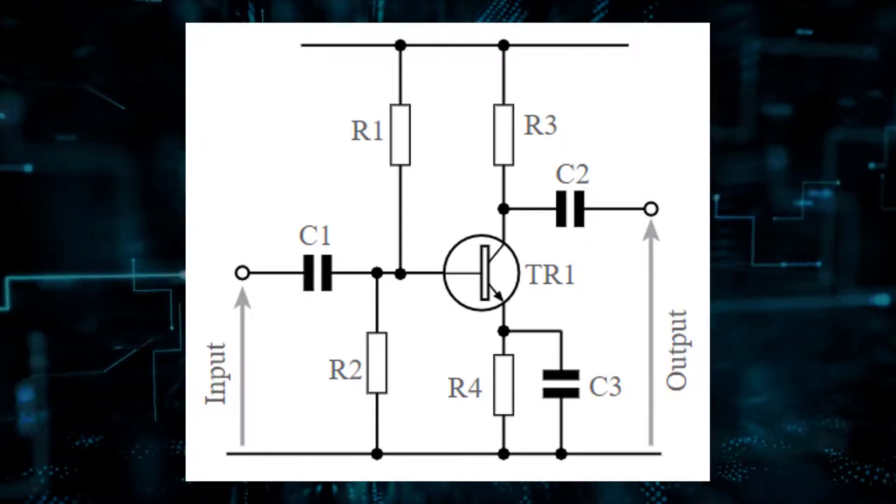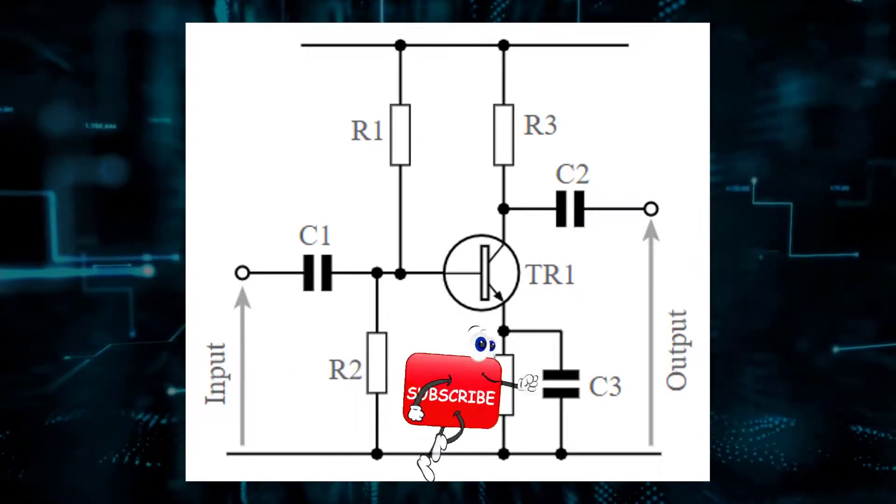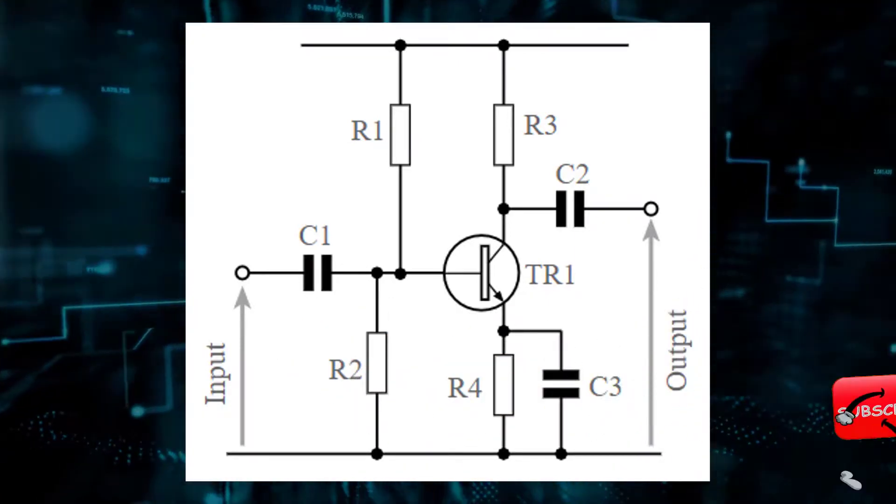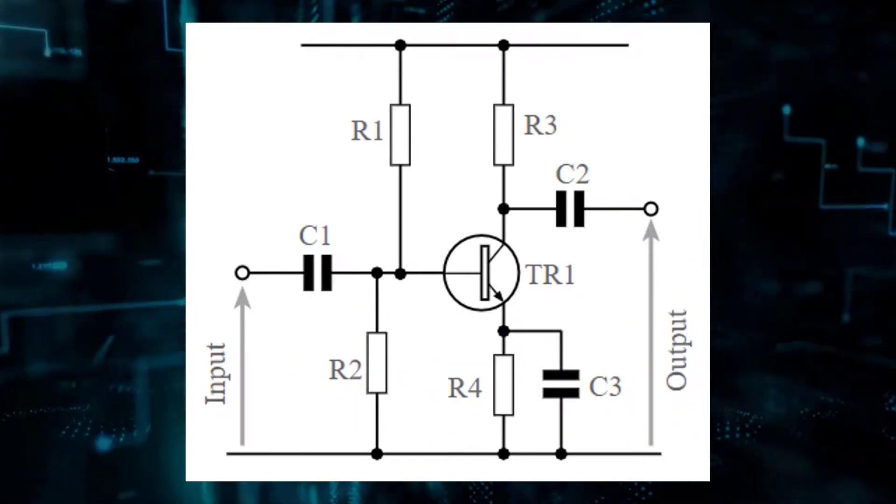As a result, the overall circuit for a Common Emitter Amplifier utilizes several components to ensure that it is able to operate in the fashion required.